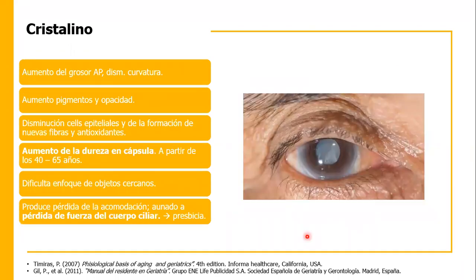En cuanto al cristalino, esta estructura empieza a dañarse desde los 40 años. Conforme avanza la edad, se aumenta el grosor antero-posterior y disminuye su curvatura. Aumentan los pigmentos, la opacidad y el material fibroso. Disminuyen las células epiteliales, la formación de nuevas fibras y los antioxidantes. Recordemos que el cristalino está compuesto aproximadamente en un 60% de agua y el restante de proteínas solubles, que tienden a acumularse y producir opacidad.